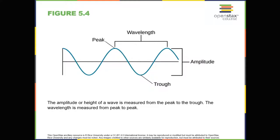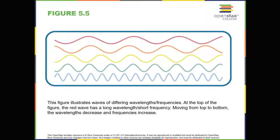Amplitude and Wavelength. Two physical characteristics of a wave are amplitude and wavelength, as shown in Figure 5.4. The amplitude of a wave is the distance from the center line to the top point of the crest or the bottom point of the trough. Wavelength refers to the length of a wave from one peak to the next. Wavelength is directly related to the frequency of a given waveform. Frequency refers to the number of waves that pass a given point in a given time period, and is often expressed in terms of hertz, abbreviated Hz, or cycles per second. Longer wavelengths will have lower frequencies, and shorter wavelengths will have higher frequencies.